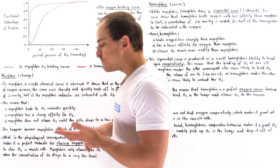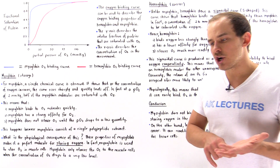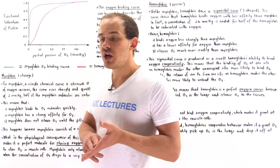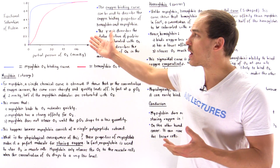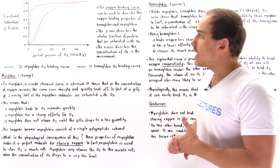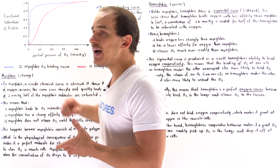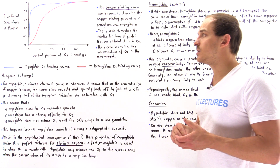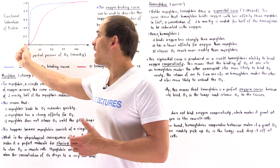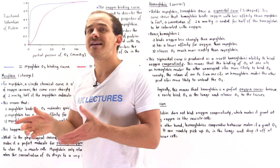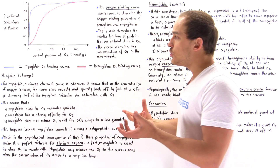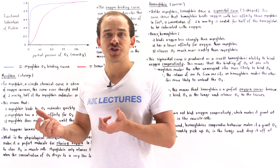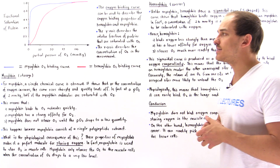In biochemistry, we use something called the oxygen binding curve, also known as the oxygen dissociation curve, to describe the properties of myoglobin and hemoglobin. The blue curve describes the myoglobin oxygen binding curve, while the red curve describes the hemoglobin oxygen binding curve. Going one way it's a binding curve, going backwards it's a dissociation curve. We can use O2 binding curve or O2 dissociation curve interchangeably — these two terms mean the same exact thing.